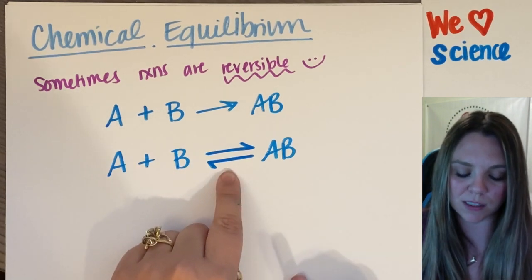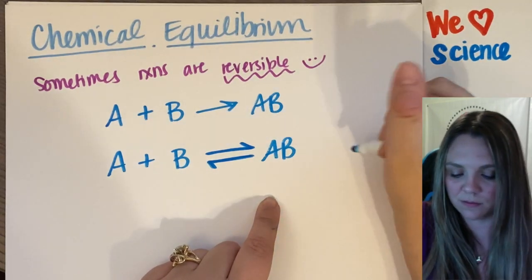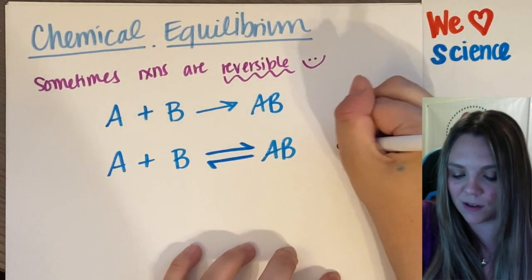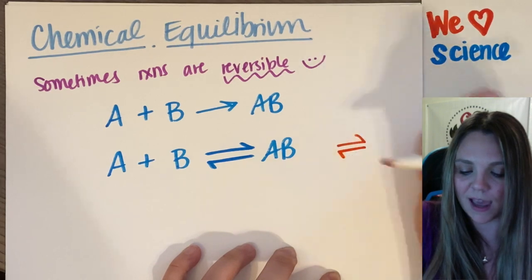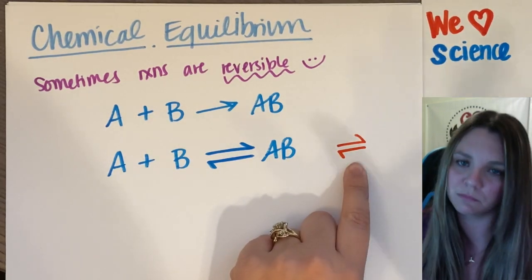And you'll notice that we draw these little arrows with the kind of half - I don't know a different way to say that. You've got a half arrow up top, half arrow on the bottom. This actually becomes important later.